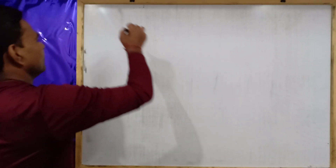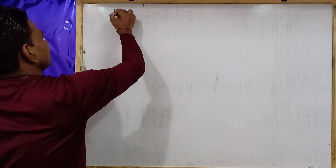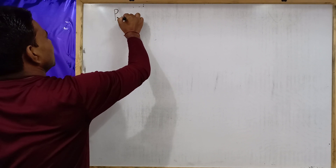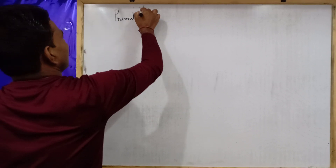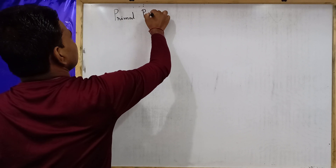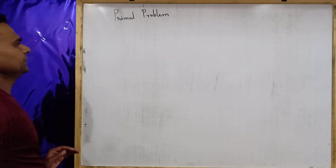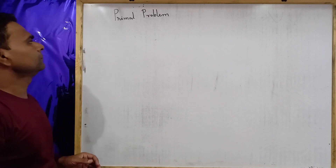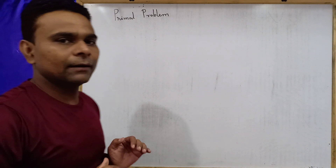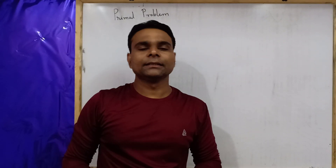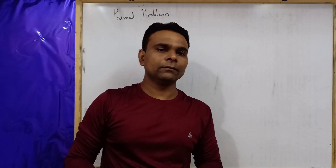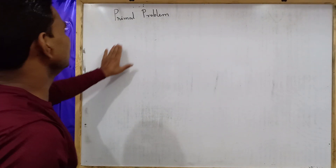Under this video, we will derive only the mathematical expression for all these things. Primal problem — that means the fundamental problem of the theory of consumer behavior.